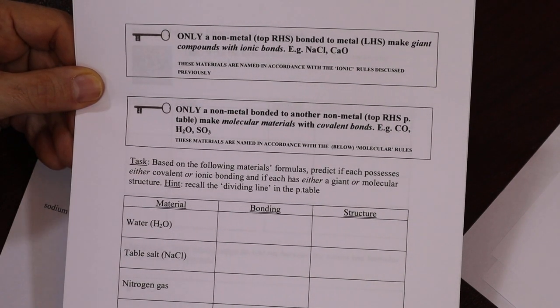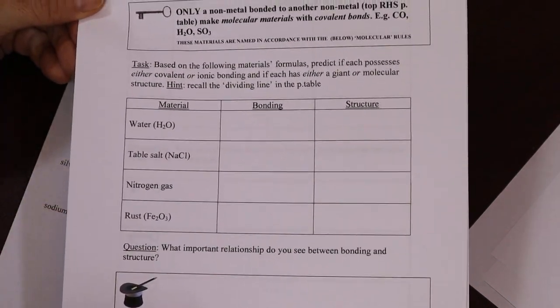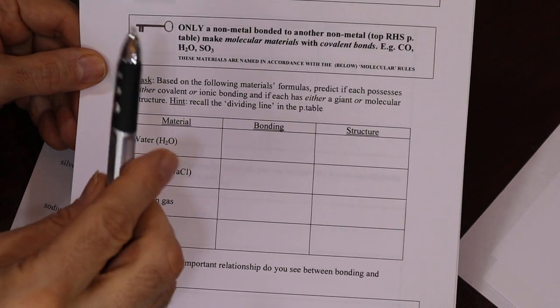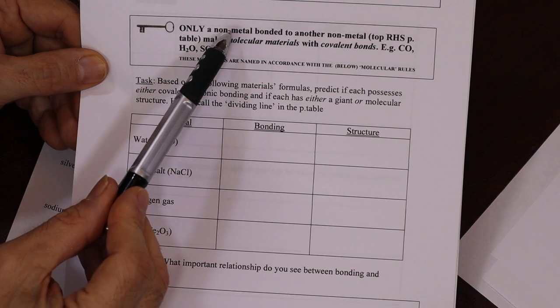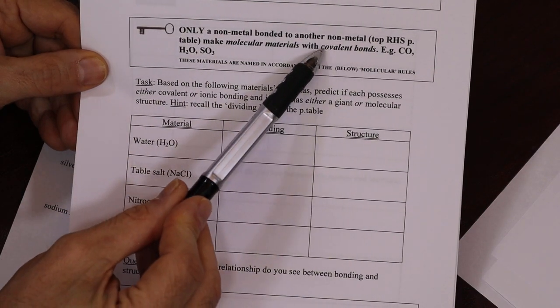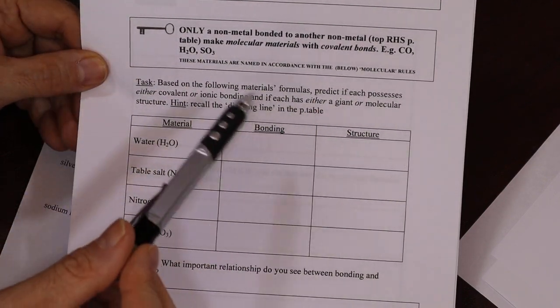However, if I'm shaking hands, if I have a shared pair of electrons, I have direction. So if I mix a non-metal, top right, with another top right, I have a covalent bond which has a definite direction.